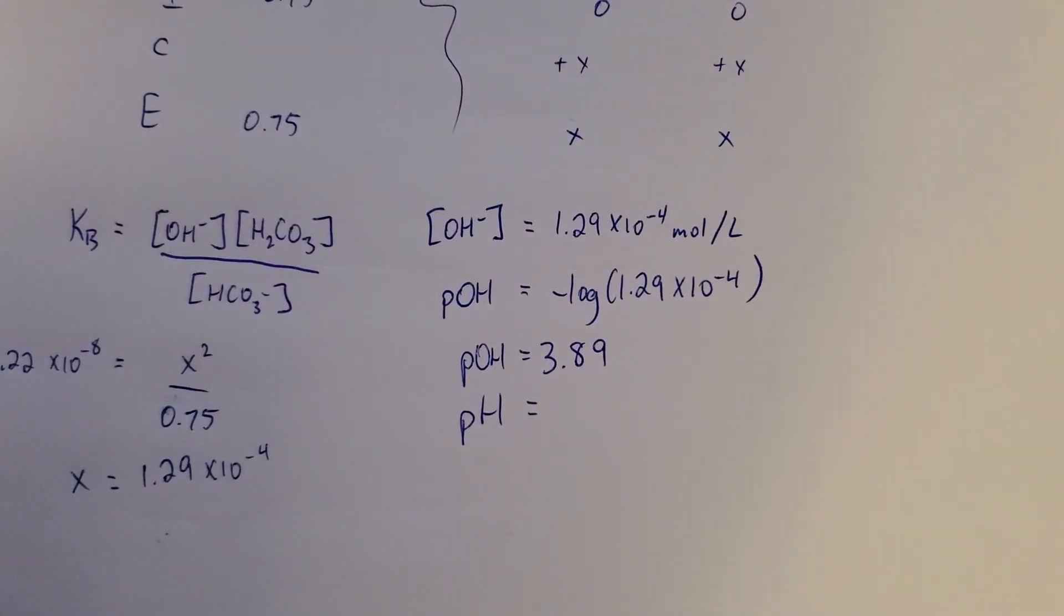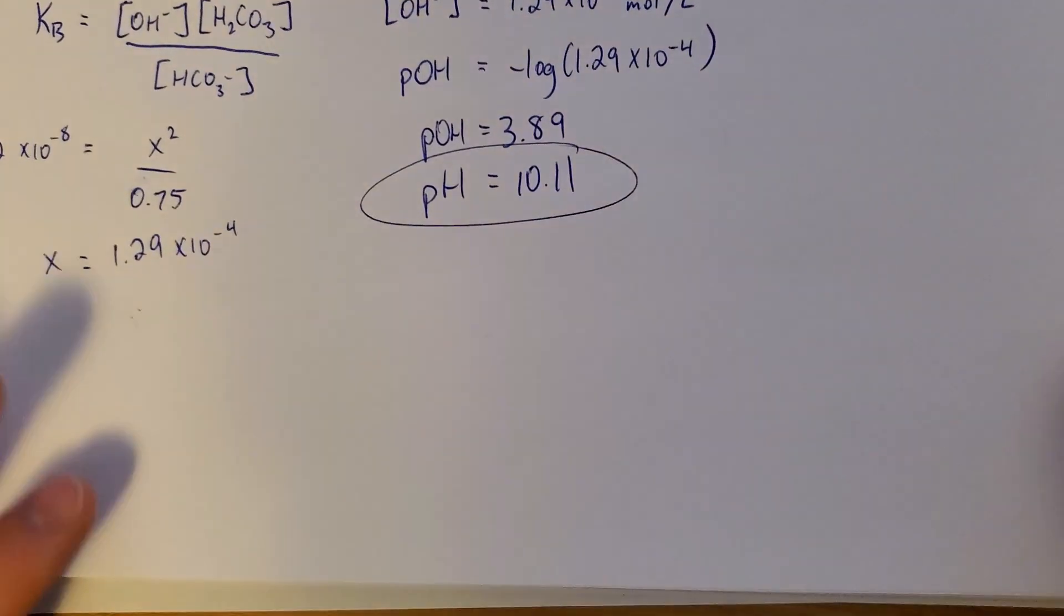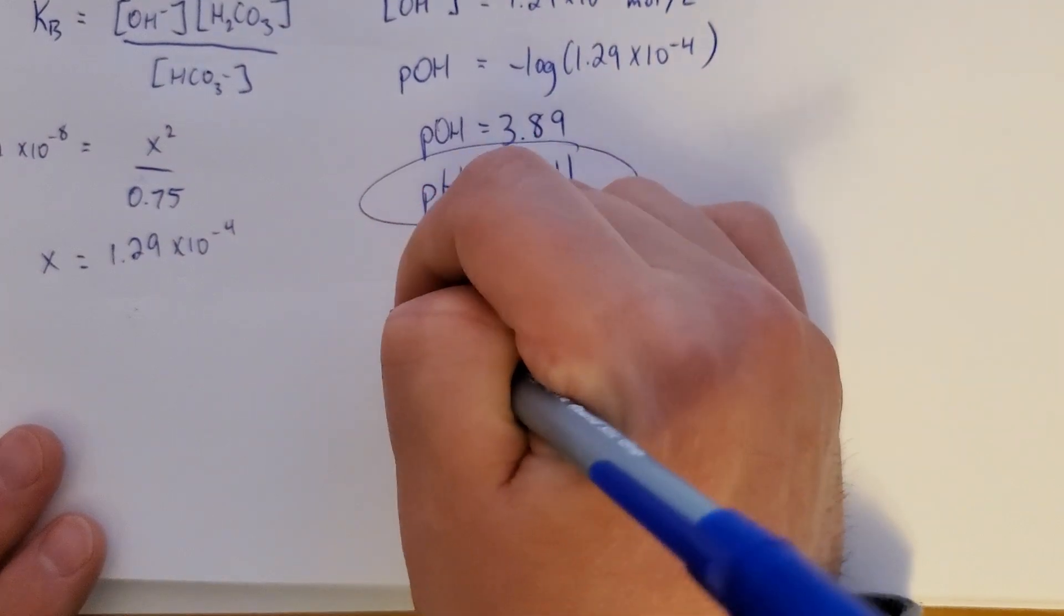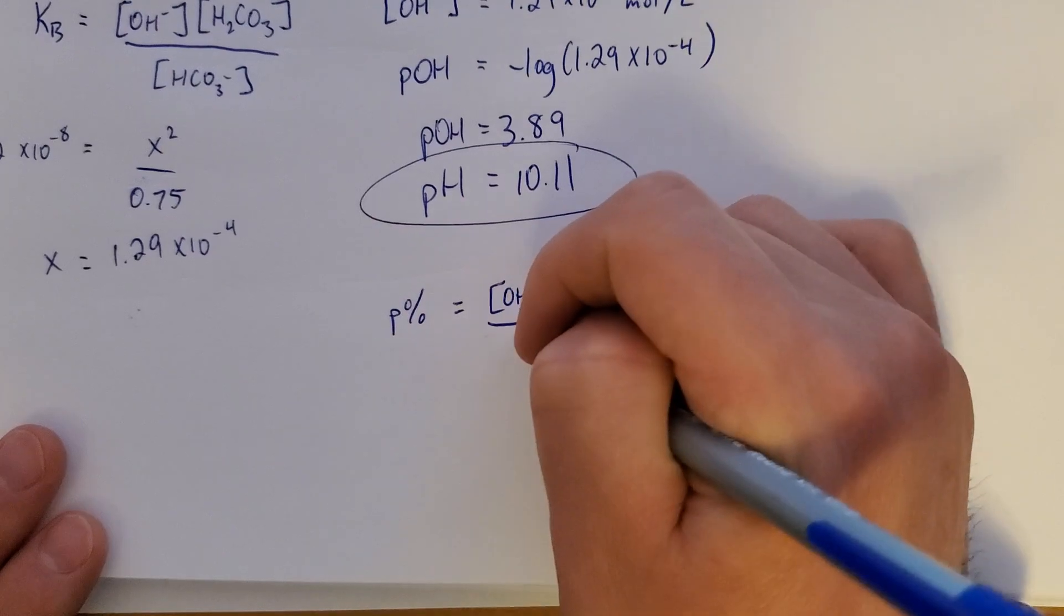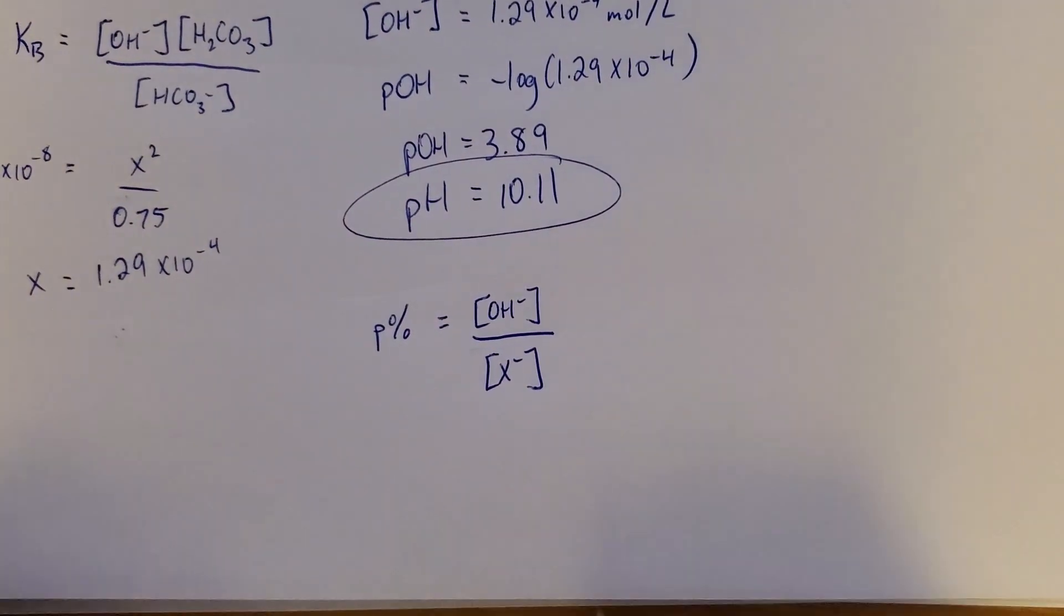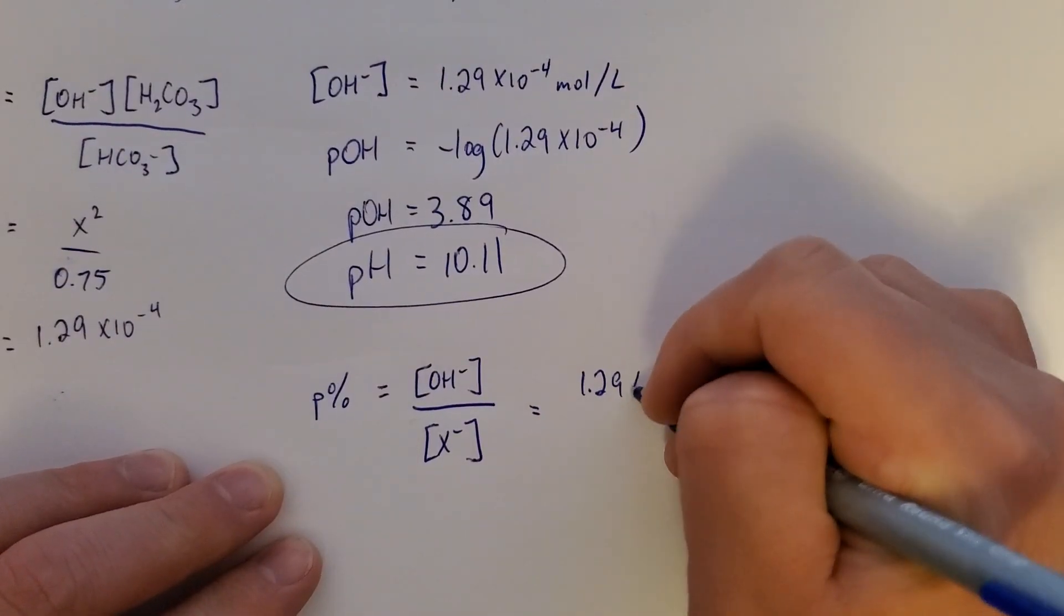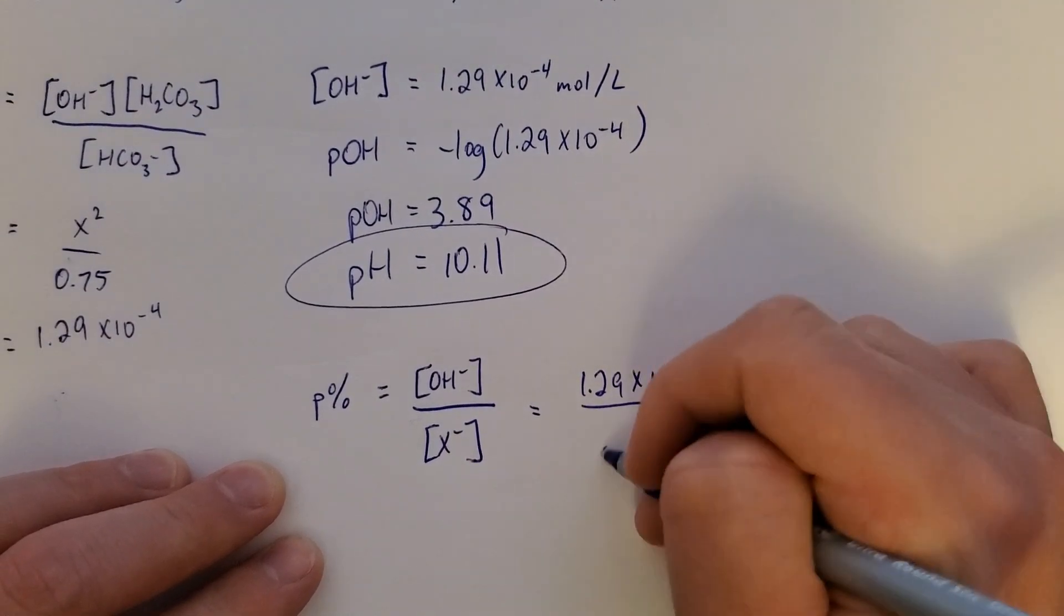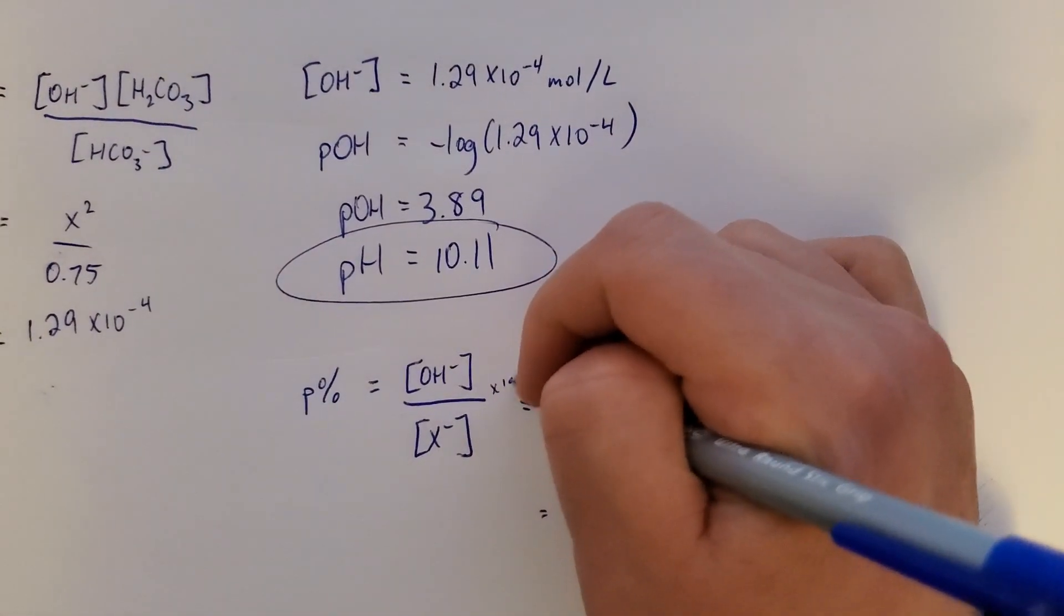So yeah, pH. Just subtract that from 14. Cool. Great. What's left? Percent ionization. That hasn't changed. So that's going to be the hydroxide concentration divided by the weak base concentration, which would be HCO3. So we get 1.29 times 10 to the negative 4 divided by 0.75.